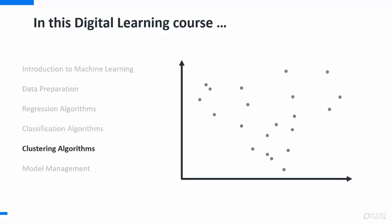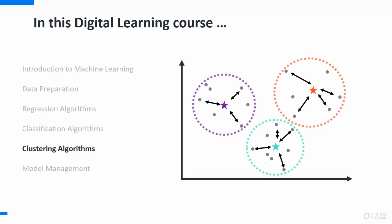Currently, Vertica only supports one clustering algorithm, k-means. This algorithm partitions any number of observations into a fixed number, k, of groups. And you, as the user, get to define how many is k. We'll show you how to build a k-means model and how to use the model to assign new data points to a cluster.